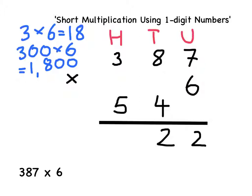This means that I must add on 500 to my answer of 1800. So 1800 add 500 equals 2300.